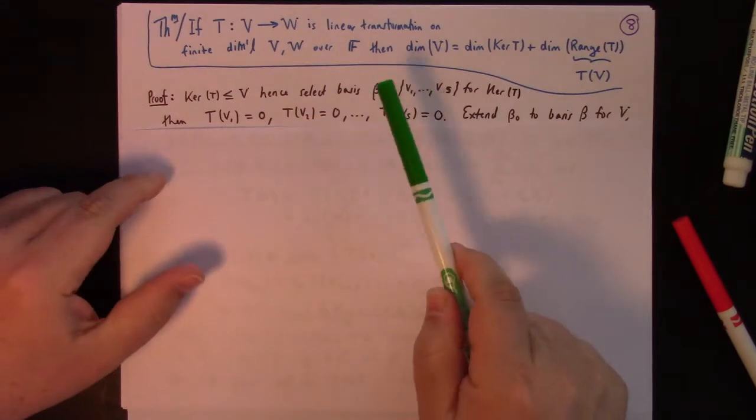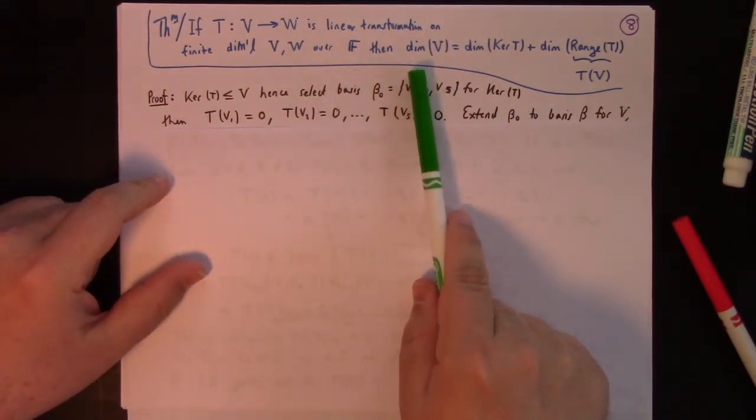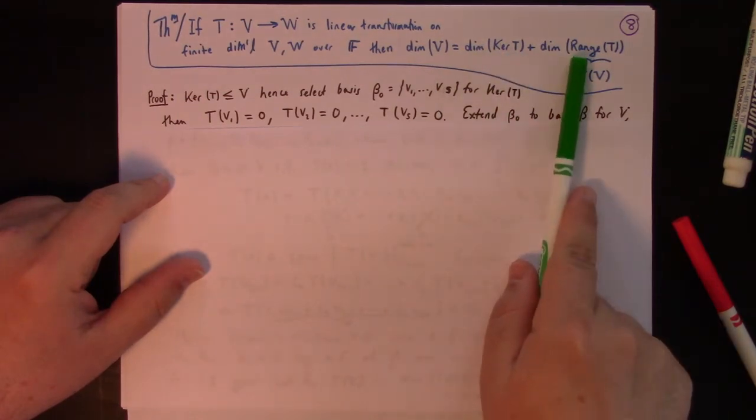So if we have a linear transformation from V to W, V and W being finite dimensional vector spaces over F, then we can prove that the dimension of V is the dimension of the kernel plus the dimension of the range.